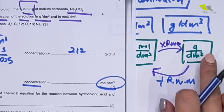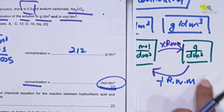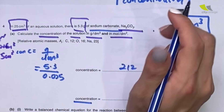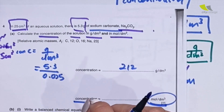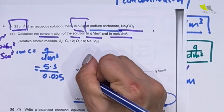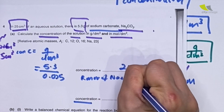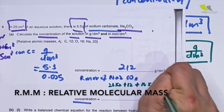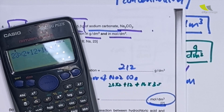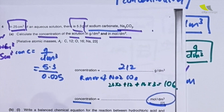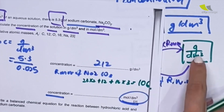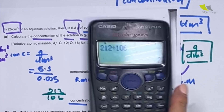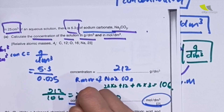Next, for concentration in mole per dm³ — given gram per dm³, divide by RMM. This question is sodium carbonate, and they didn't give the RMM, but it's not difficult to find. RMM of Na₂CO₃: 23×2 + 12 + 16×3 = 106. Using 212 divided by RMM: 212 divided by 106 gives a perfect number of 2 mole per dm³. Done.